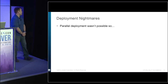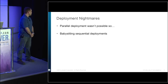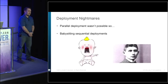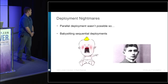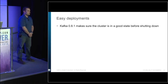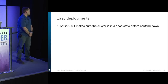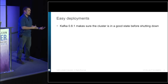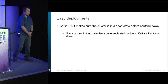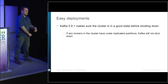We also had deployment nightmares — parallel deployments weren't possible, so we wound up babysitting sequential deployments. If more than one broker is down within your cluster, you're losing data because you won't have enough active leaders, and that's not acceptable. So we influenced the developers to create shutdown hooks. Before any broker shuts down, it checks the health of the rest of the cluster to ensure everything's up and running before entering the shutdown sequence. If any brokers have under-replicated partitions, the broker will refuse to shut down.